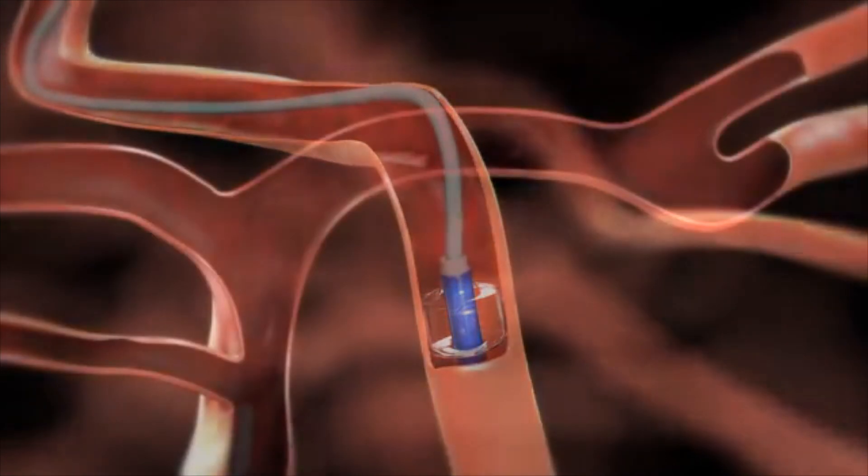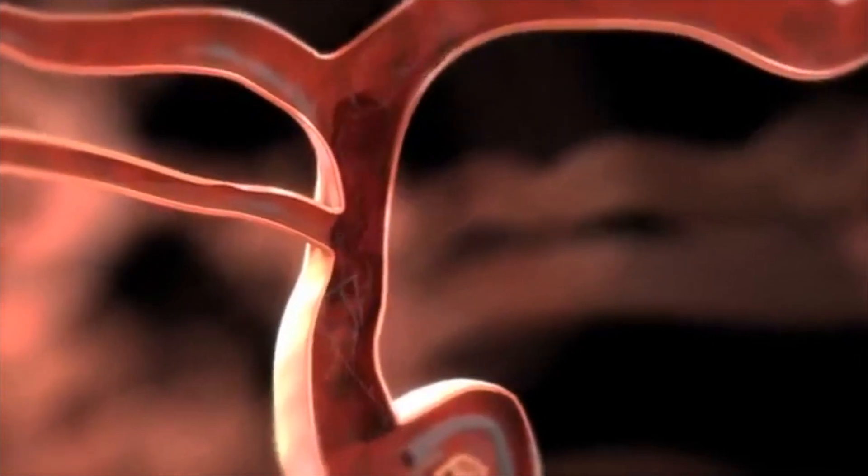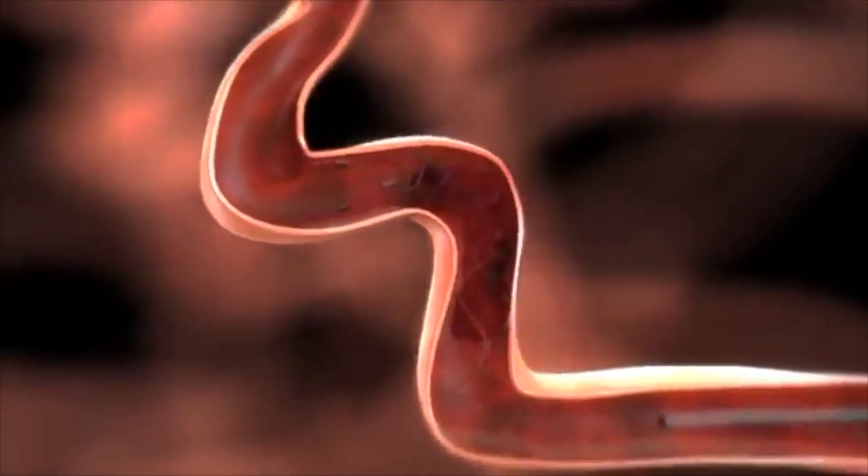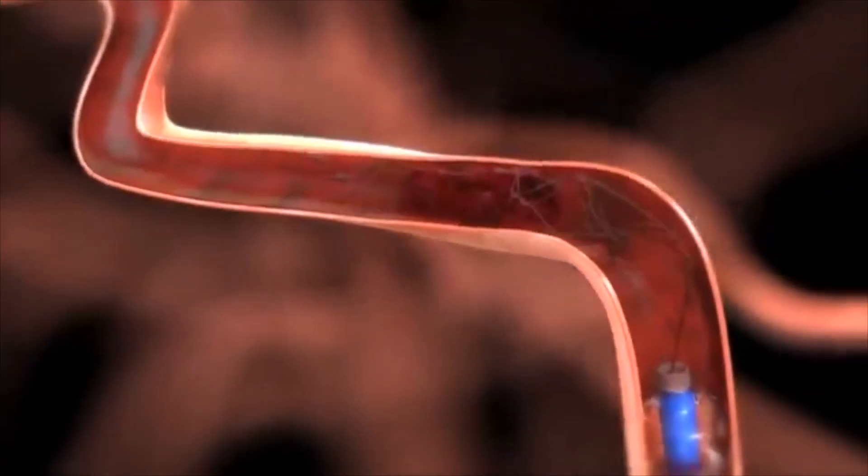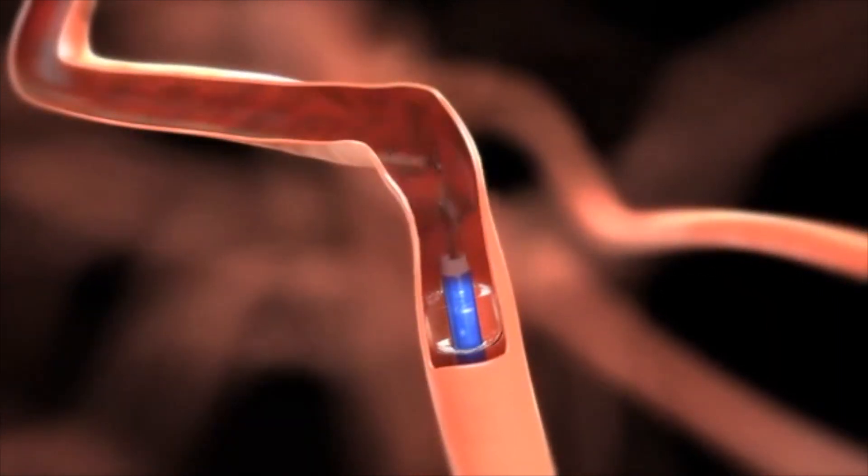To retrieve the thrombus, slowly withdraw the micro catheter and solitaire FR as a unit to the guide catheter tip while applying aspiration to the guide catheter.